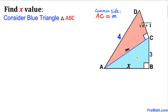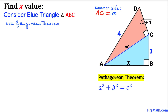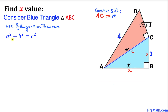Let's consider the blue triangle ABC. We know that this is a right triangle, so we are going to use the Pythagorean theorem: a² + b² = c². I'll call side AB as lowercase a, side BC as b, and the longest leg as side c.